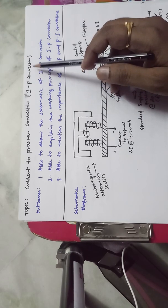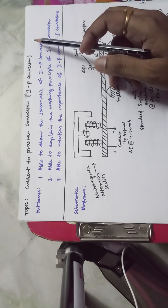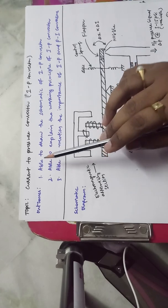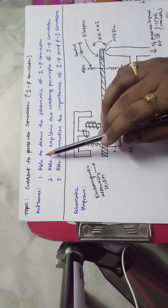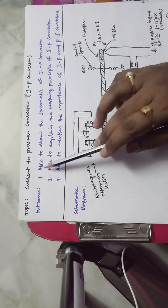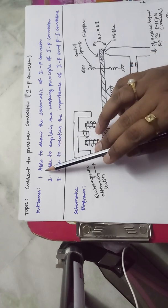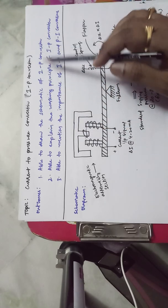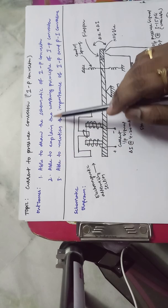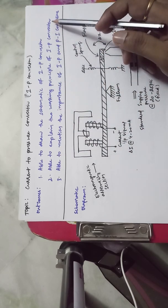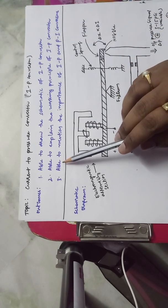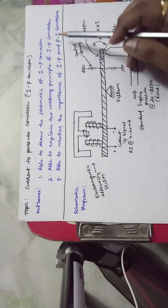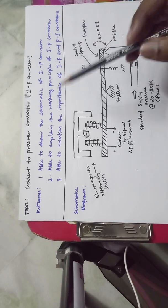The I2P converter is a device which converts 4 to 20 milliamperes of input to 3 to 15 PSI of output for further activation of pneumatic elements. After completion of this video lecture, the student will be able to draw the schematic of the I2P converter and explain its working principle.